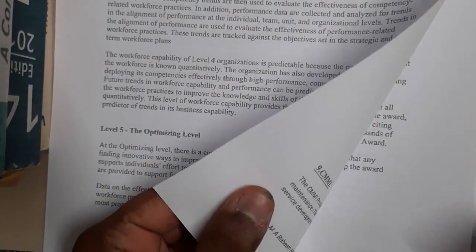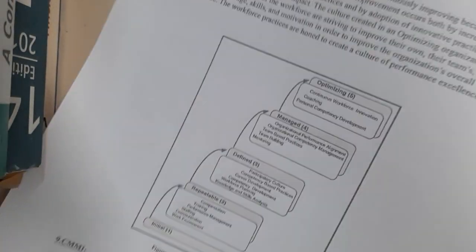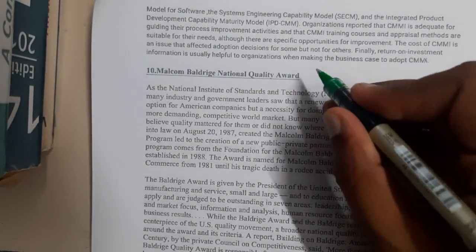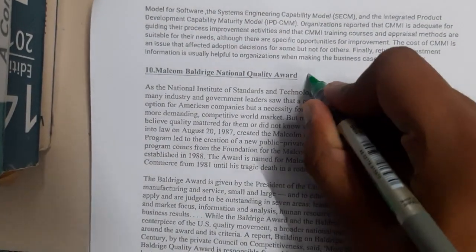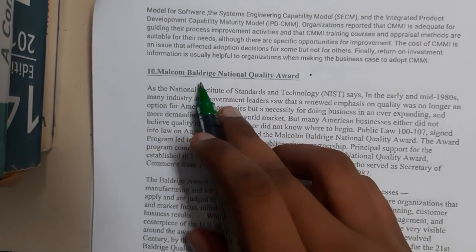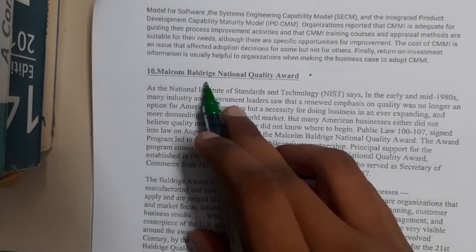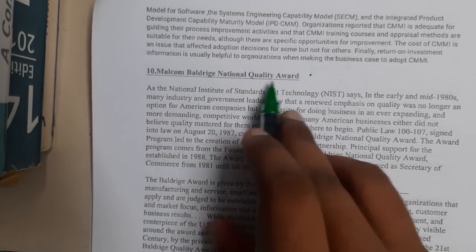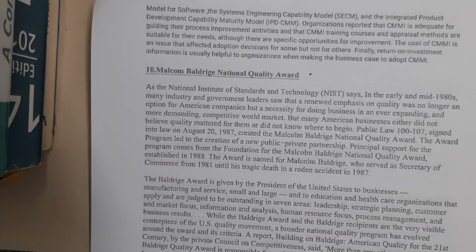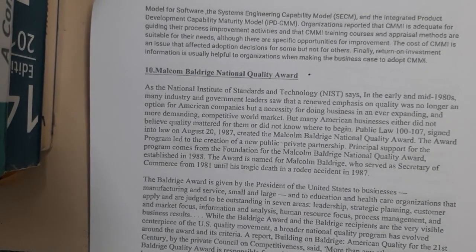Those are all five stages in the People Capability Maturity Model. I hope everyone got some basic idea. In the next lecture we will be discussing the Malcolm Baldrige National Quality Award. Thank you for watching.